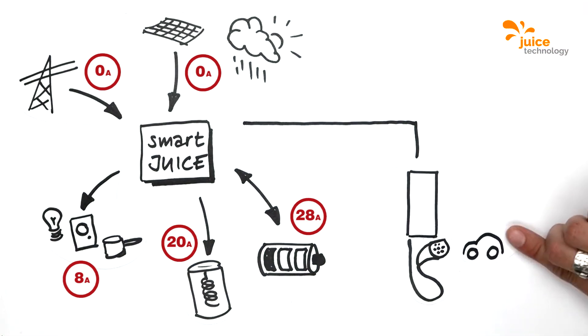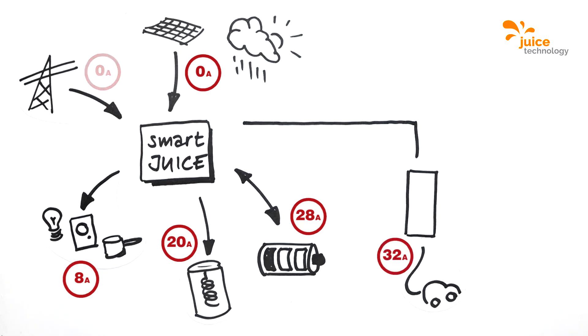You return home and connect your car to your charging station. In a matter of seconds, Smart Juice checks how much power this new consumer needs, how much energy is currently available, and matches the supply options and consumer devices to one another optimally.